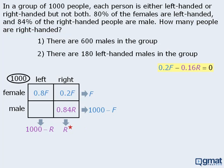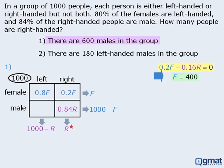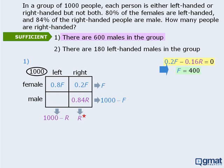Now let's examine each statement. Statement 1 tells us that there are 600 males in the group. If there are 1,000 people altogether and 600 of them are male, then the remaining 400 must be female — in other words, f equals 400. When we add this to our equation, we can solve for r to find the total number of right-handed people. As such, statement 1 is sufficient.